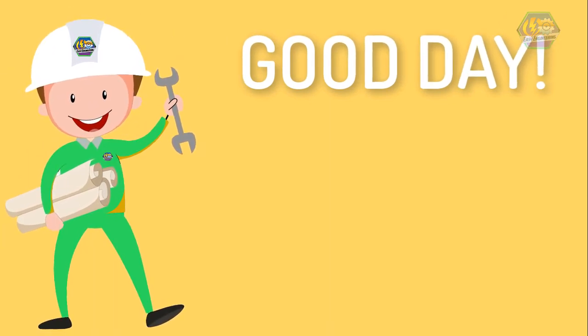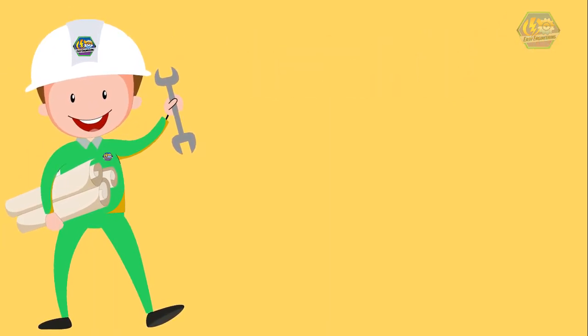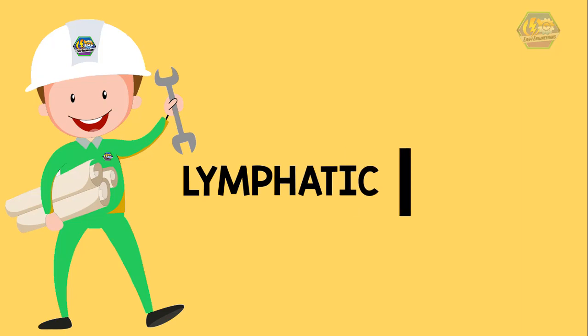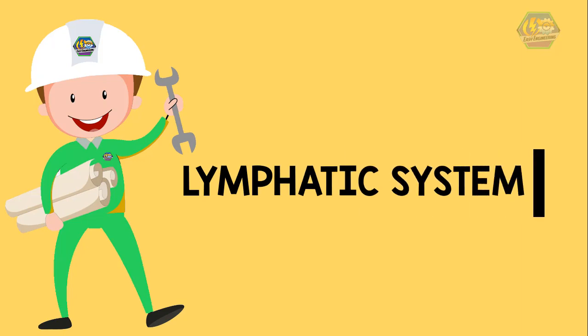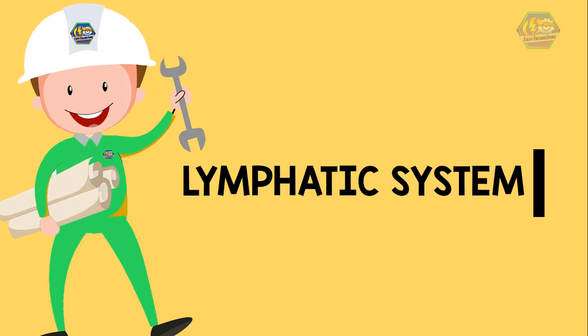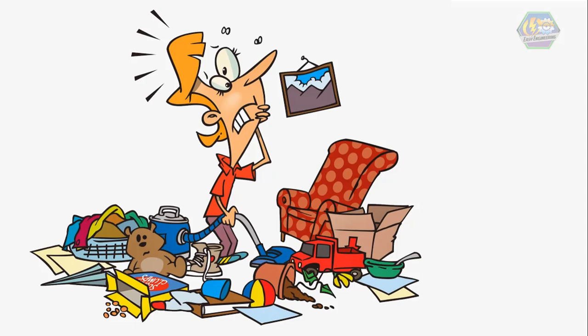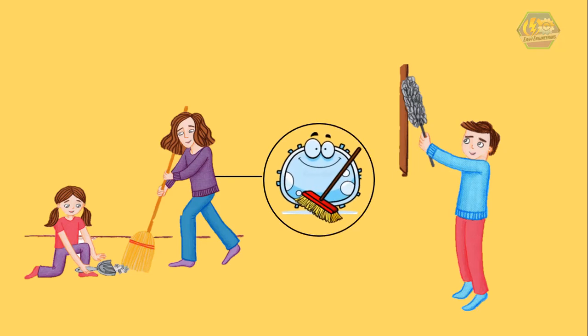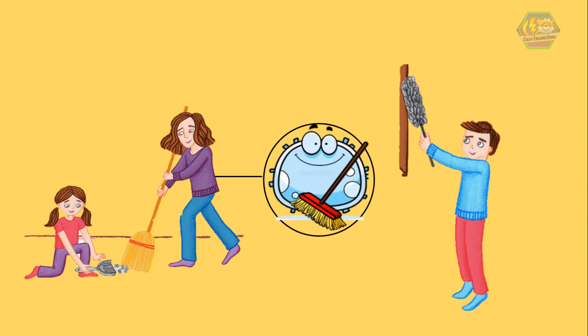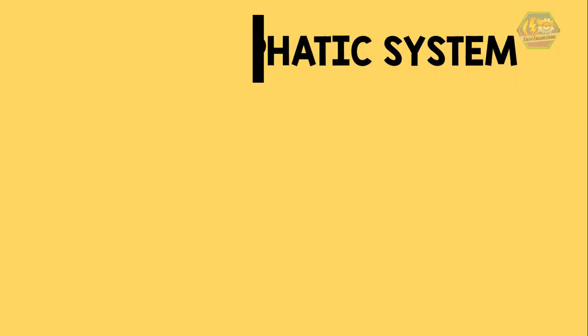Good day learners, this is Easy Engineering. For today's topic we're going to talk about the lymphatic system. If you forget about cleaning the house like what your parents told you to, then cockroaches and rats might love to live inside. Seems icky, isn't it? Like our houses, our bodies also have some cleaners in them, and they're really hard working too. Let's dive in to find out more.